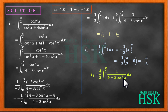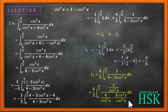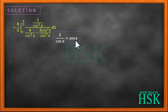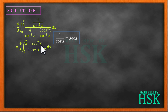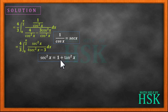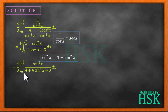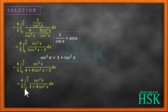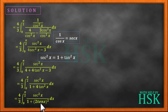Next we take I2, and divide the numerator and denominator by cos²x. Since 1/cos²x = sec²x, we have I2 = 4/3 times the integral of sec²x upon (4sec²x − 3) dx from 0 to π/2. Next, replacing sec²x with 1 + tan²x and simplifying, this gives I2 = 4/3 times the integral of sec²x upon (1 + 4tan²x) dx from 0 to π/2. We can write 4tan²x in the denominator as (2tan x)².